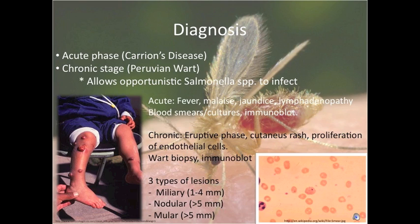Some acute symptoms include fever, malaise, jaundice, and lymphadenopathy. Ways of diagnosing this are through blood smears or blood cultures, which are seen in the bottom right of infected red blood cells, or immunoblots. Symptoms of the chronic stage include a cutaneous rash and proliferation of endothelial cells, which are the warts seen in the left figure. Diagnosis of this includes wart biopsy and immunoblot. The three types of lesions, based on size, are listed below.